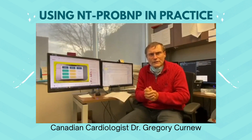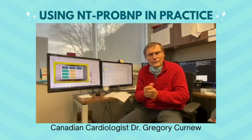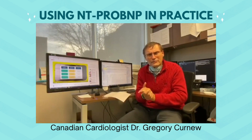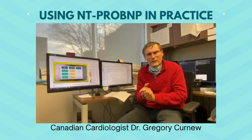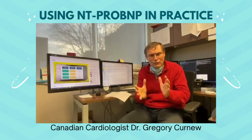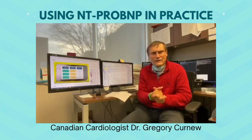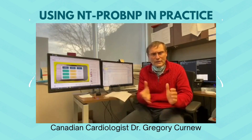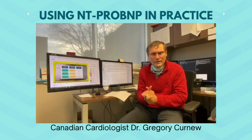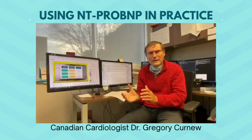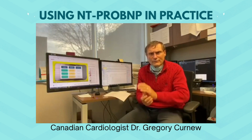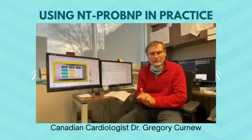It normally helps to contextualize. In a young person, the value is probably less than 30 or so. It's also confusing because lots of things make it go up or down. As you get older, the value goes up. If your kidneys aren't working, it goes up. If you're in atrial fibrillation, it goes up. If you're overweight, it actually goes down. So you have to put that into context.